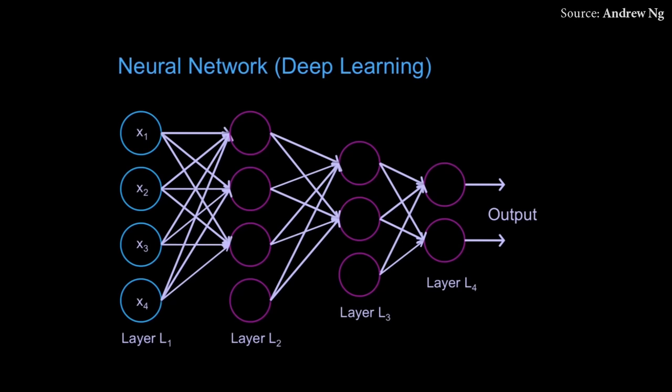Dear Fellow Scholars, this is Two Minute Papers with Károly Zsolnai-Fehér. This is a mind-boggling new piece of work from scientists at Google Brain on how to hack and reprogram neural networks to make them perform any task we want.